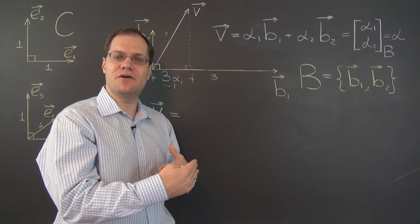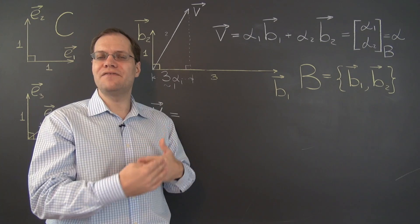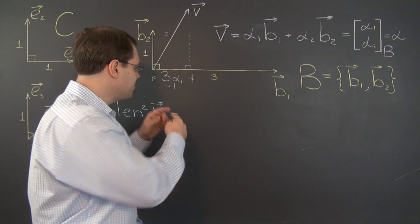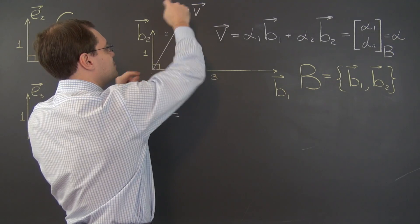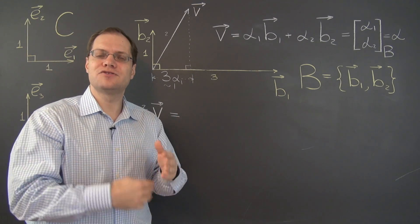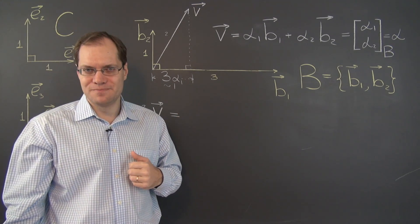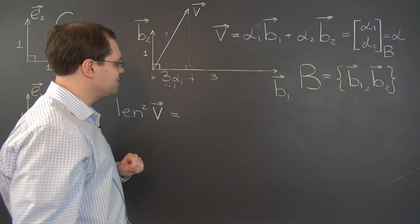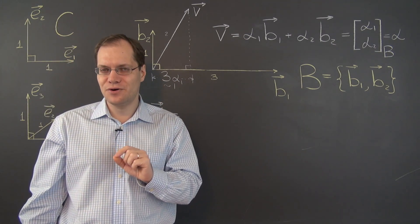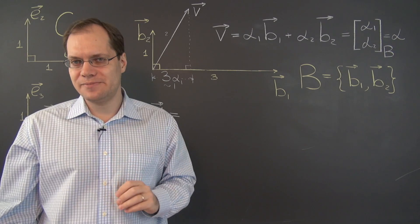It's now 3 alpha 1. Because alpha 1 has shrunk by a factor of 3, to get back to the length of this segment so that in a moment we can get back to the length of this vector, we have to multiply it back by 3. So the length of this segment is no longer alpha 1 like it was before. It is now 3 times alpha 1.